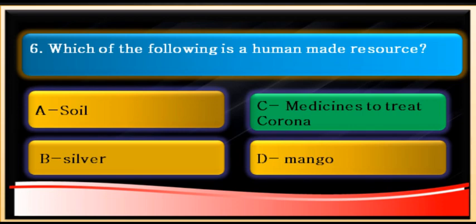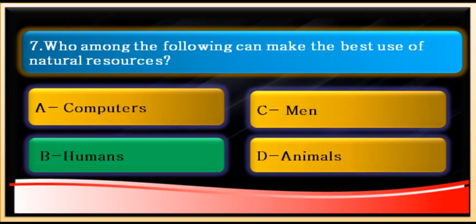For example, a carpenter takes wood from nature and uses knowledge and skills to convert it into a table, chair, or cupboard — so those are human-made resources. Now let's move to question number seven: who among the following can make the best use of natural resources?